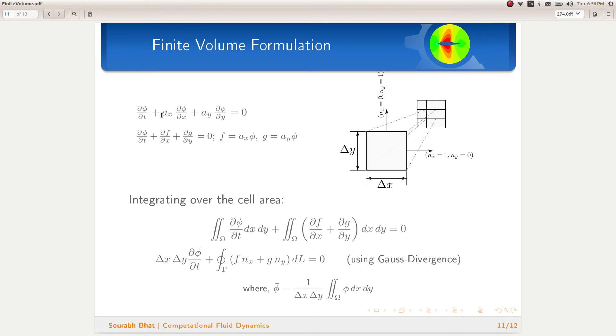However, we have these terms Ax and Ay which are outside the derivative term unlike the equation we used for deriving the finite volume formulation. This form of partial differential equation is called a non-conservative form and we cannot use this form for applying the finite volume method.